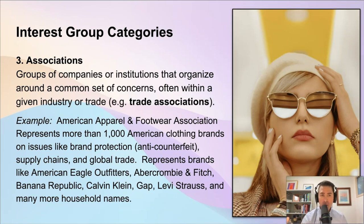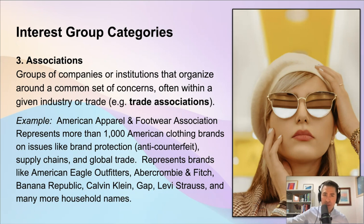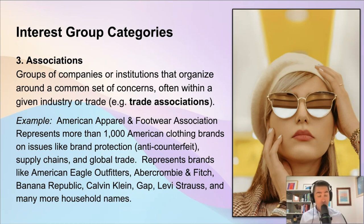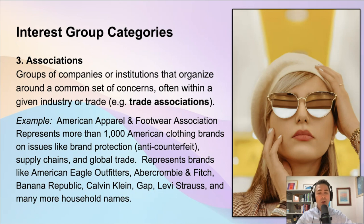Let's say you're walking through the mall and you want to buy some clothes. As you walk through, you see stores like American Eagle Outfitters, Abercrombie & Fitch, Banana Republic, Calvin Klein, the Gap, and Levi's. All of these stores are competing with one another for your business — they are competitors at the end of the day. But by coming together in a trade association, they can collectively use their power to lobby the federal government for benefits that protect the entire industry. In fact, over 1,000 American clothing brands have come together in this group called the American Apparel and Footwear Association — not to be confused with American Apparel the brand — to lobby the government for favorable legislation, like making sure counterfeiters aren't making fake Levi jeans and that supply chain policies are favorable for the industry.